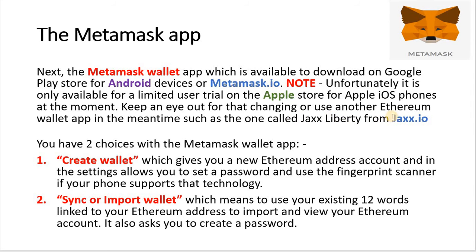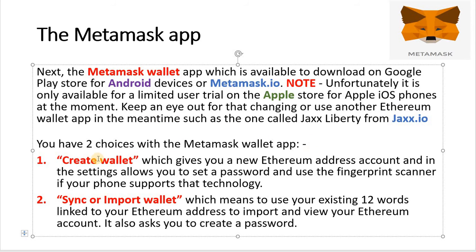I won't cover the Jaxx wallet in this video. With MetaMask you have two choices: create a wallet, which gives you a new Ethereum address to use on the Scottcoin v3 system; and in the settings you can set a password and use the fingerprint scanner if your phone supports it. There's also the sync or import wallet option, which lets you use your existing Ethereum wallet by entering the 12 words linked to your Ethereum address.